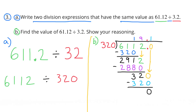Number 3. A. Write two division expressions that have the same value as 61 and 12 hundredths divided by 3 and 2 tenths. One example would be 611 and 2 tenths divided by 32, and 6,112 divided by 320.